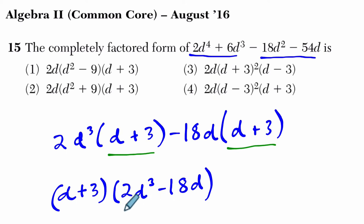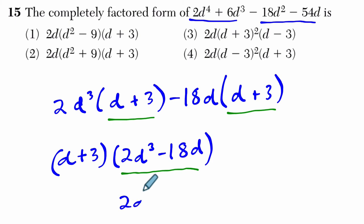Now at this point, we're almost done. It's just that here, in this binomial here, we can factor out 2d. And if we do that, what's left over is d minus 9.